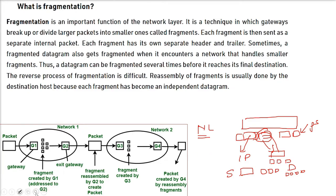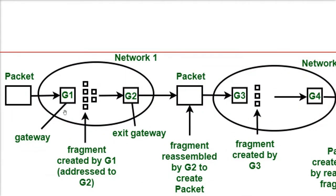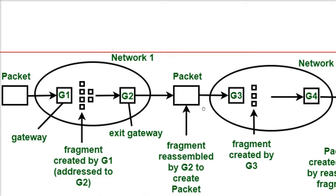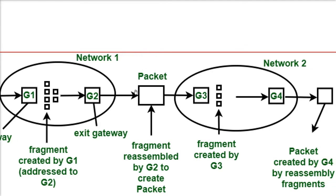See, we have a packet coming. This is gateway 1. The gateway has divided the packet into fragments. Now it has crossed the gateway.